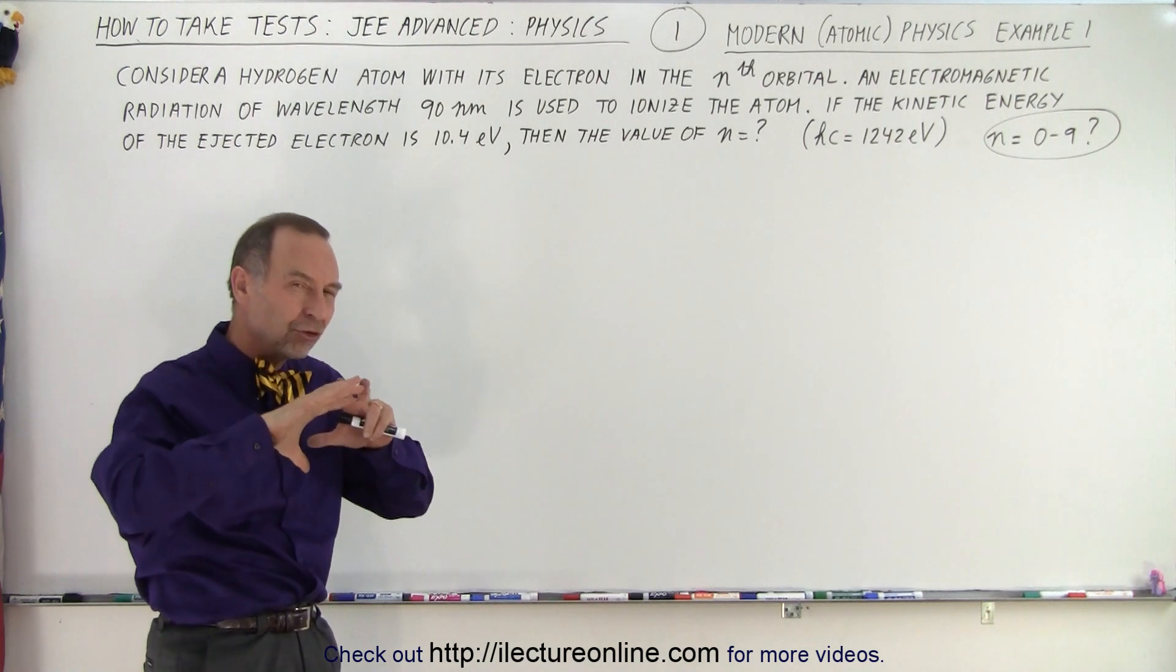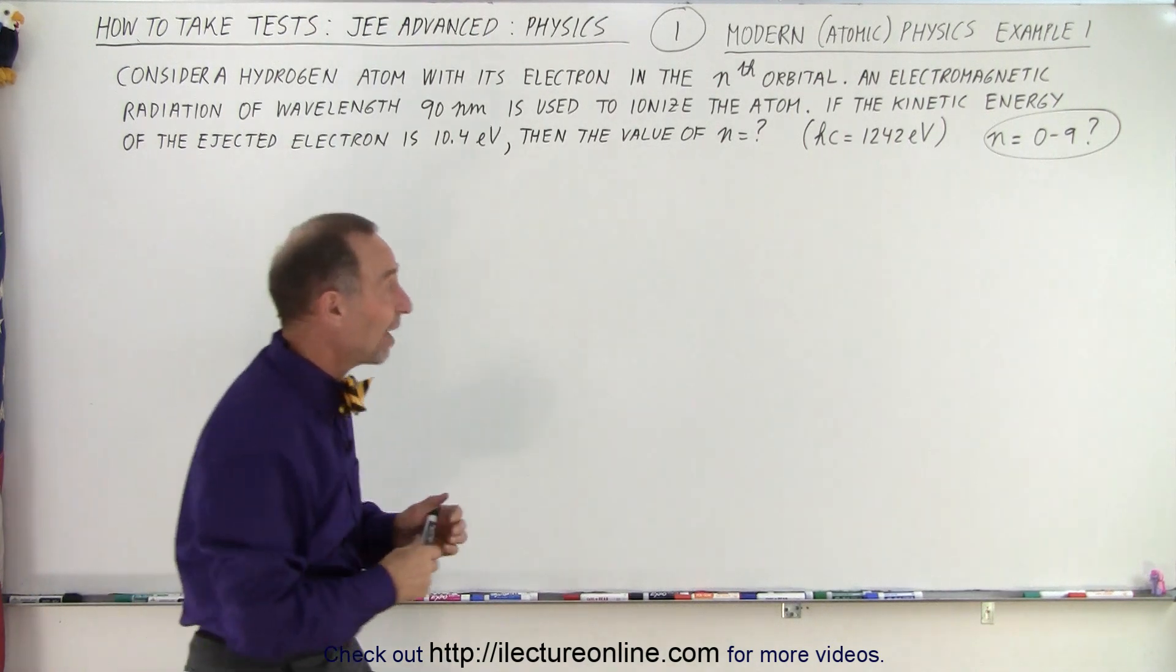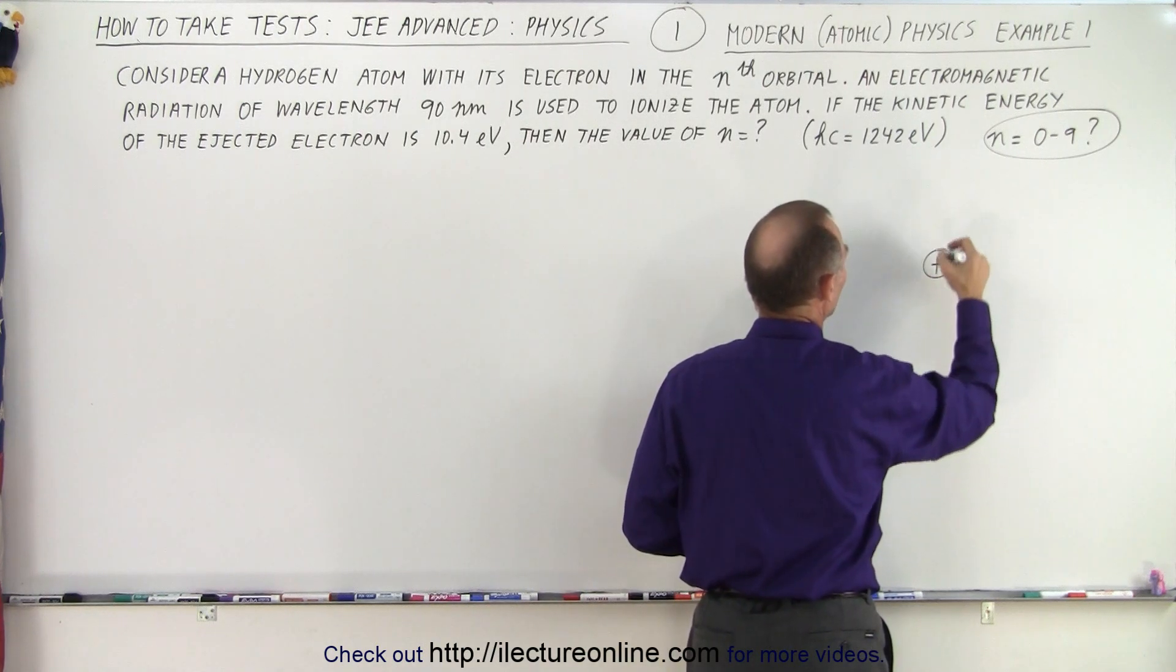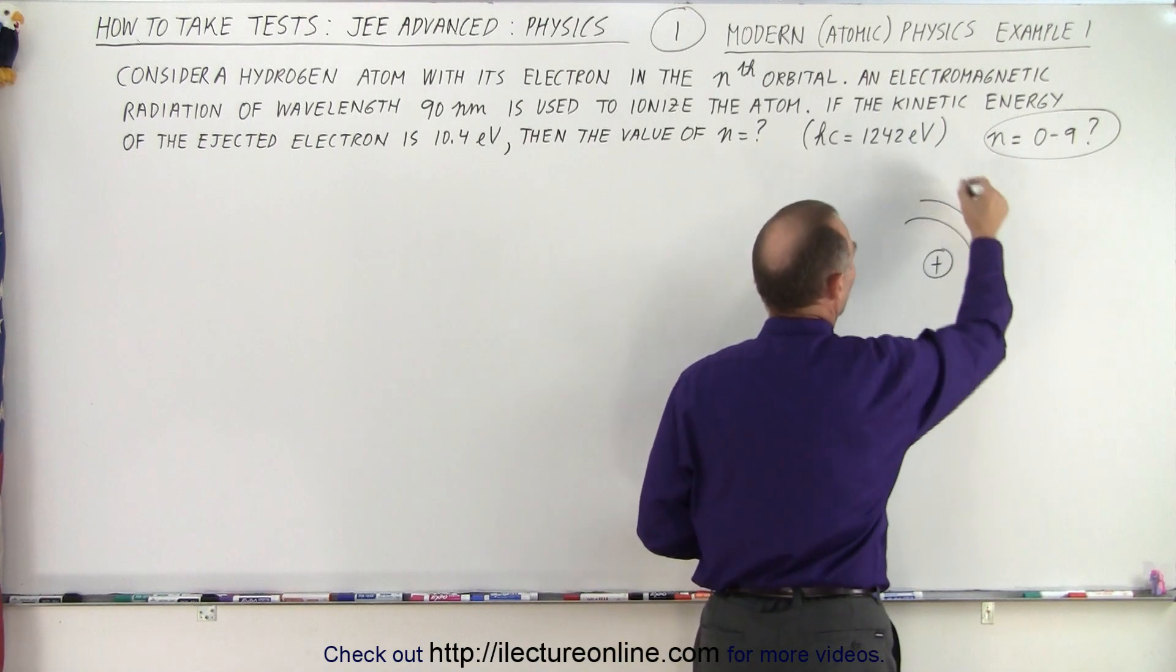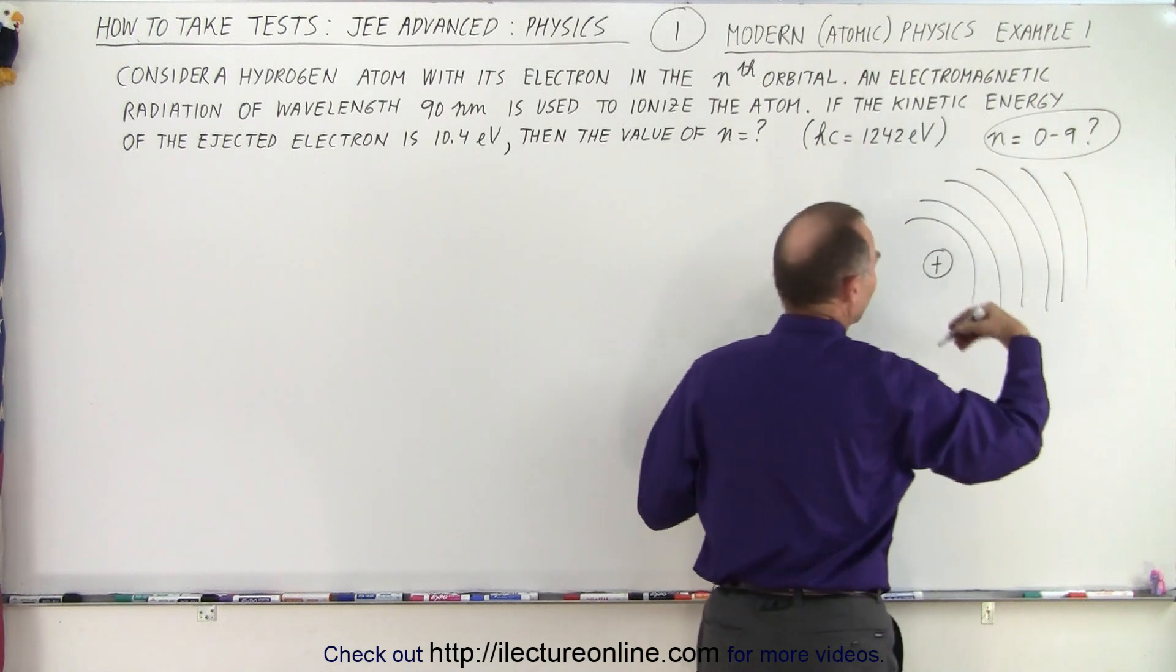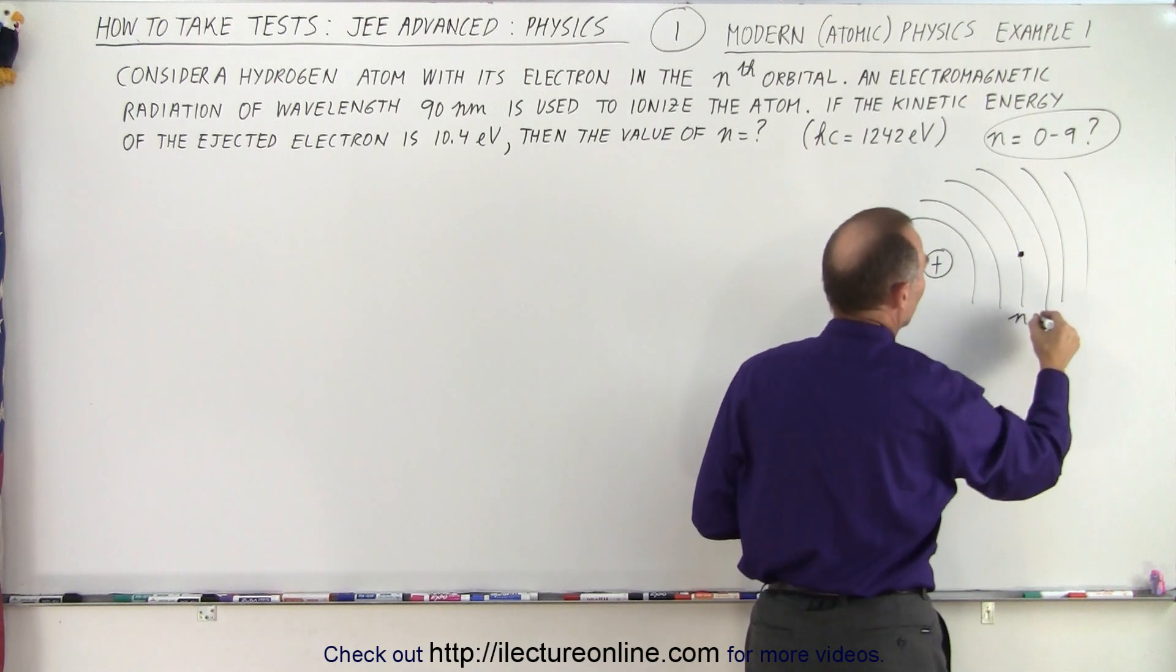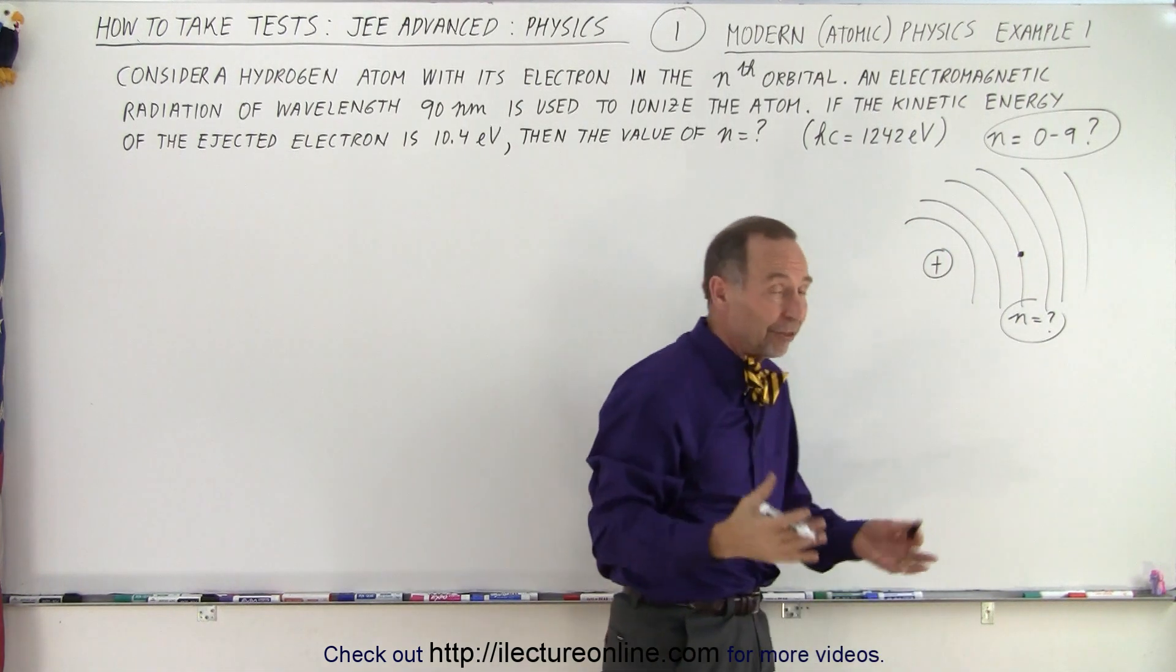All right. So, quickly, let's draw a schematic and try to figure out what's happening. So we have a hydrogen atom, which has a positive nucleus. We have a number of orbitals around that. And the electron is in one of them. We don't know which one. It's in the n-orbital. We need to know what n is. n could be 1, 2, 3, 4, 5. We need to figure that out.